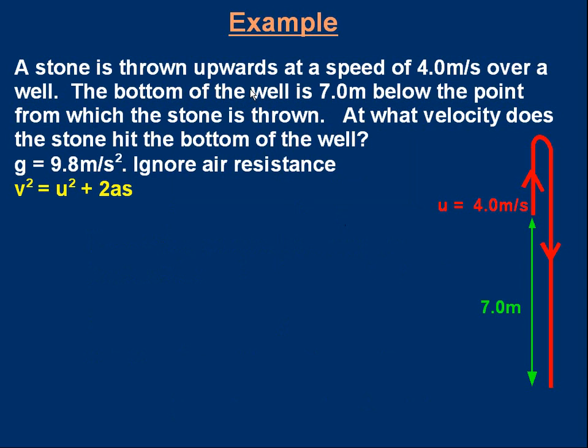A stone is thrown upwards at a speed of 4 m/s over a well. The bottom of the well is 7.0 m below the point from which the stone is thrown. At what velocity does the stone hit the bottom of the well? We're given the value for g = 9.8 m/s². Ignore air resistance. It often helps to draw a diagram. On the right hand side, here's a suitable diagram showing u marked, the path going up, then down the well, ending up 7 meters below where it started.